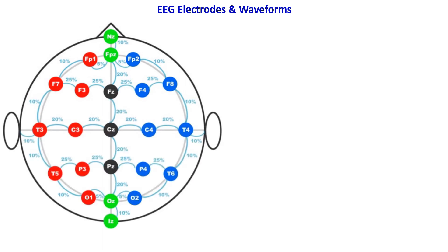We use 10-20 lead system for EEG recording. The electrodes are placed as shown in the picture. These electrodes are then connected to the recording system that we have discussed earlier.